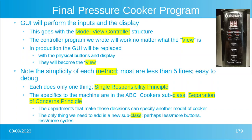The GUI is going to perform the inputs and the display, just like it would on the real pressure cooker. This goes with the model-view-controller structure. The controller program that we wrote will work no matter what the view is. In production, the graphical user interface will be replaced with physical buttons and the display — they will become the view. But when you're testing your code, you're probably going to do it on a computer without the pressure cooker nearby.